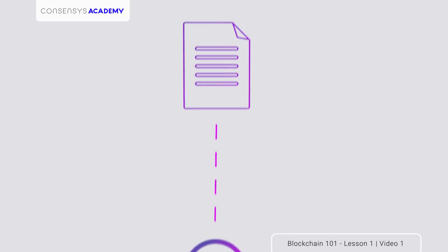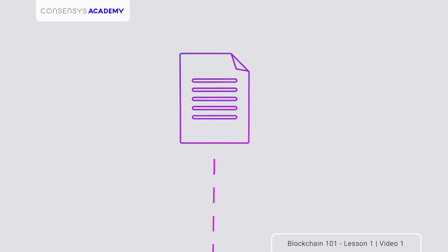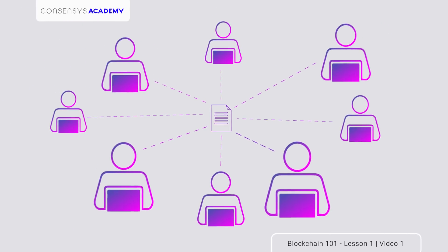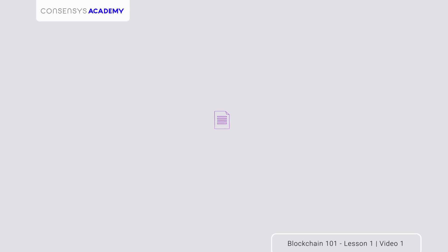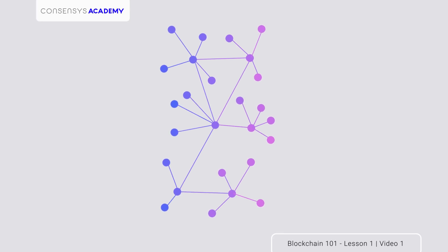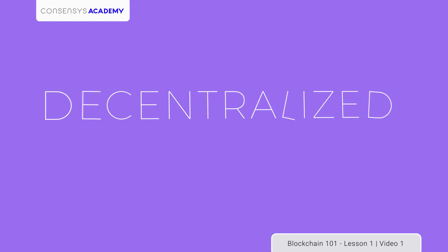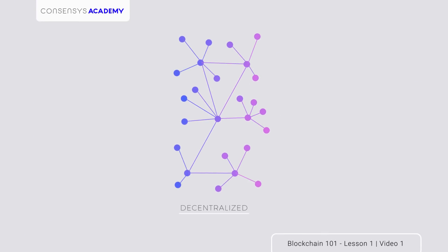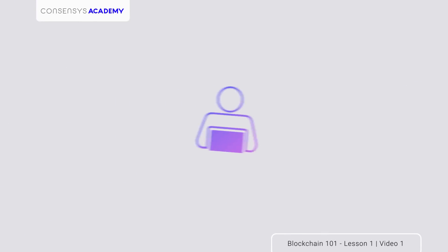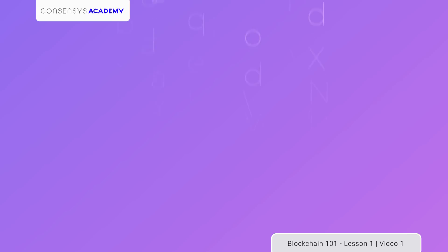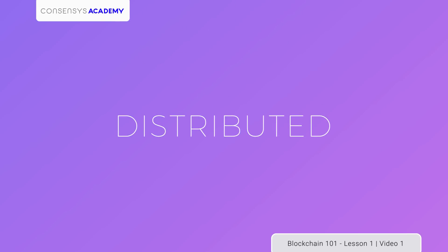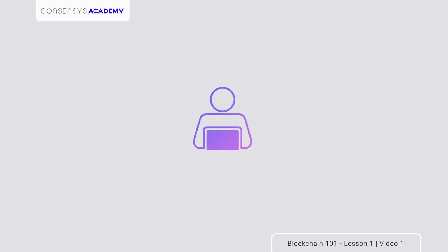Think of it like a shared document in the cloud. The information doesn't live in any one place — multiple people can view, edit, and update the same file from wherever they are, which makes it decentralized. And because blockchains store information across a network of personal computers, they're also distributed.